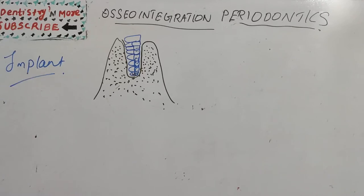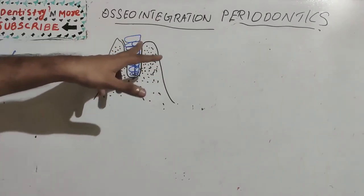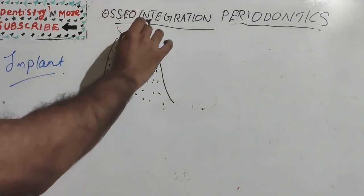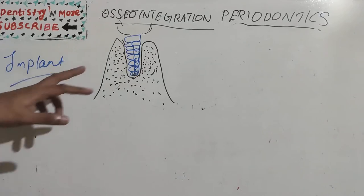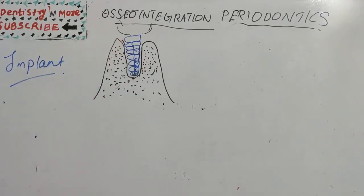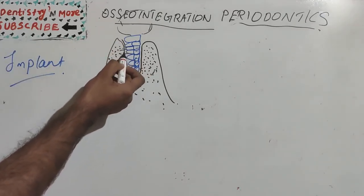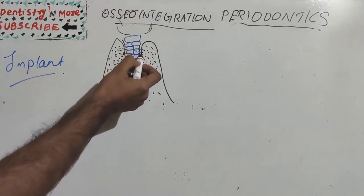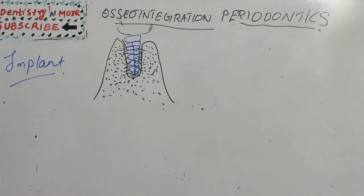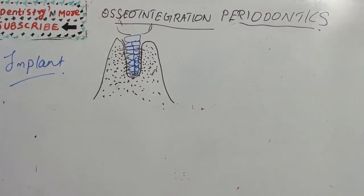We keep implants in bone to support artificial prosthesis or artificial tooth. When we lose a tooth, we can place an implant to support a tooth. So what happens when we place an implant in an empty socket? There should be an interlocking between this implant and the bone. Because sometimes it will be a load bearing area such as in posterior region. There has to be a bonding between the bone and this implant. Otherwise, there will not be a good prognosis of the procedure.